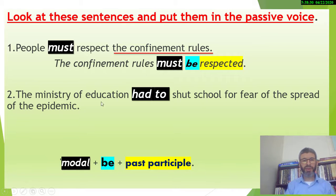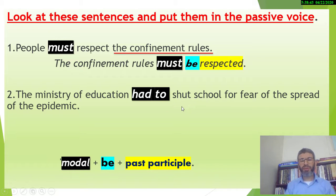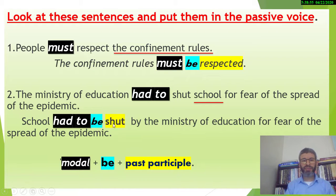Number two: 'The Ministry of Education had to shut schools.' 'Had to' is a modal expressing obligation in the past. The object is 'school,' so we move it to the subject position. Applying modal + be + past participle: 'Schools had to be shut by the Ministry of Education for fear of the spread of the epidemic.'